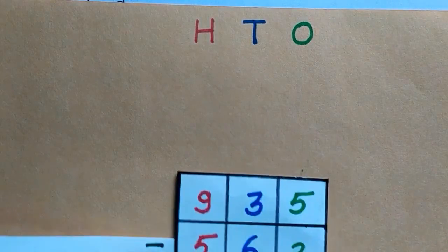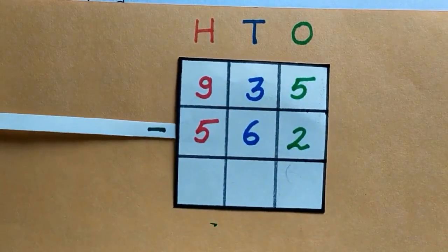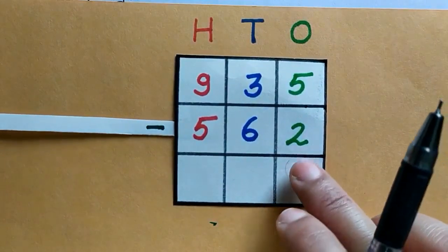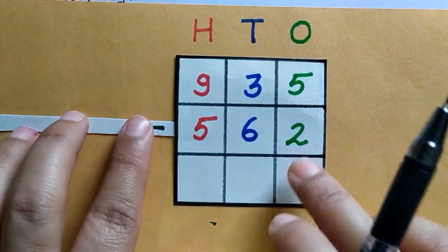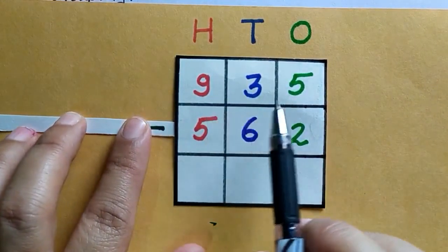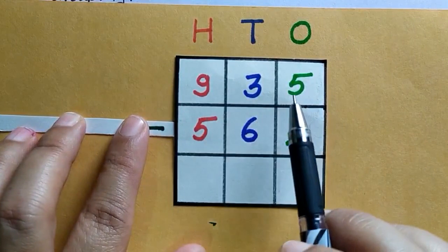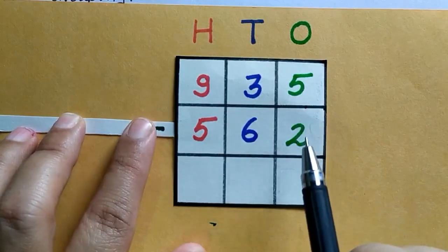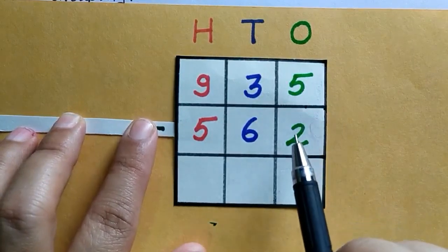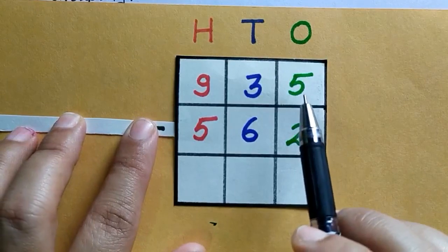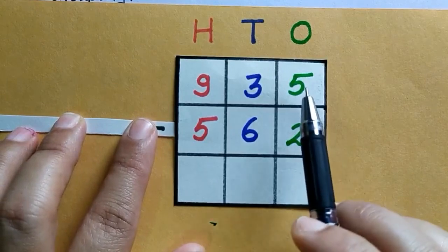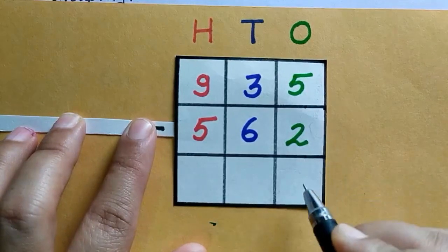Now we will do subtraction of 3 digit numbers with grouping. Here is a question in which we have to subtract 562 from 935. At ones place, 5 and 2, we have to subtract 2 from 5. 5 minus 2 equals 3.